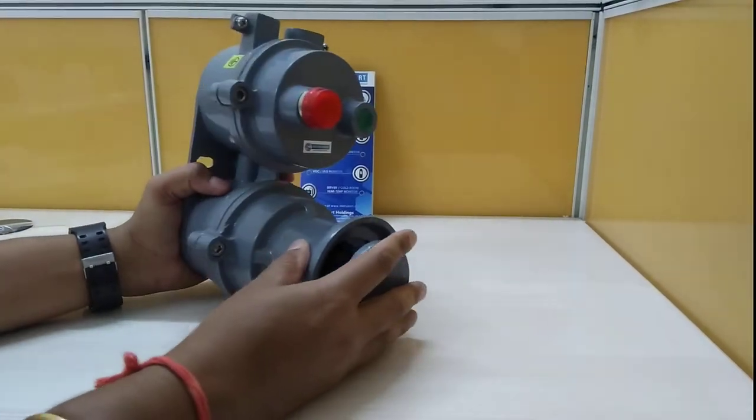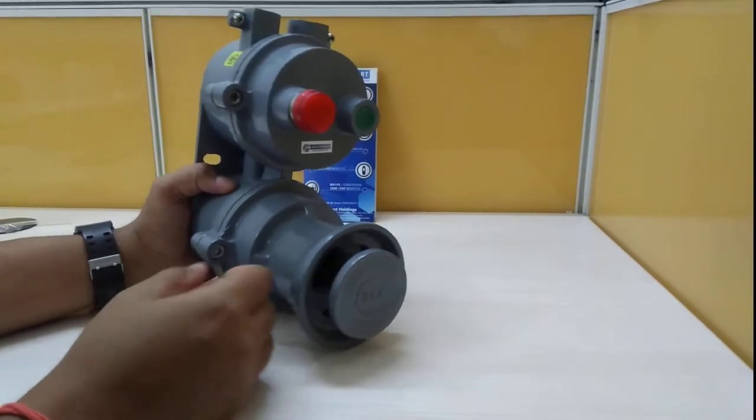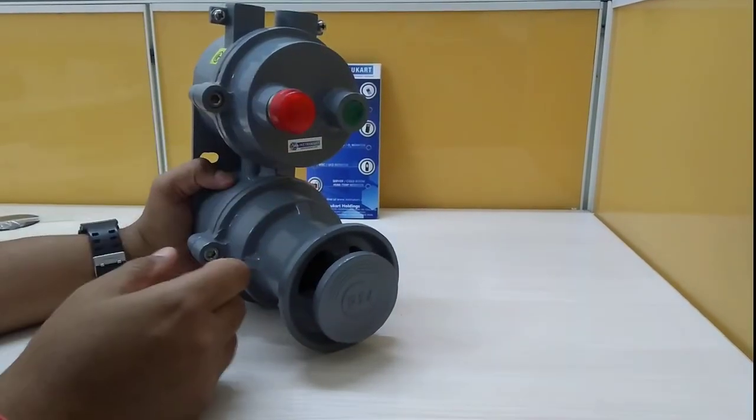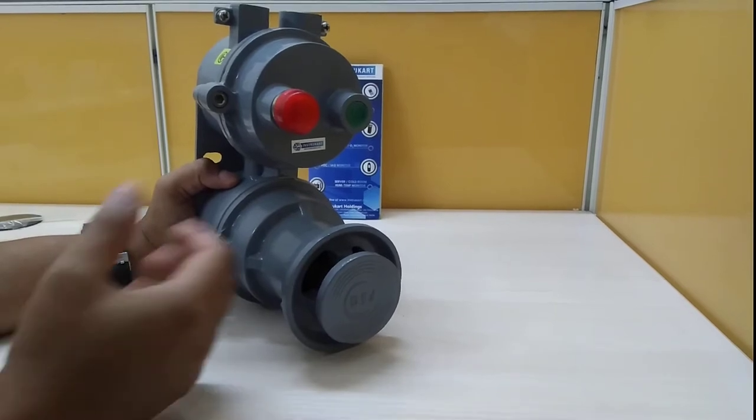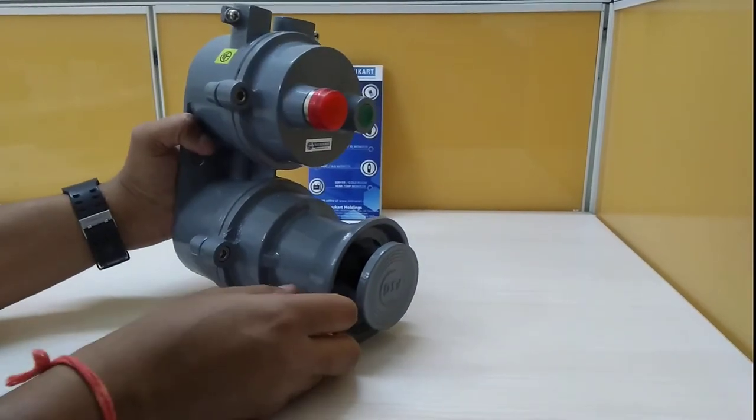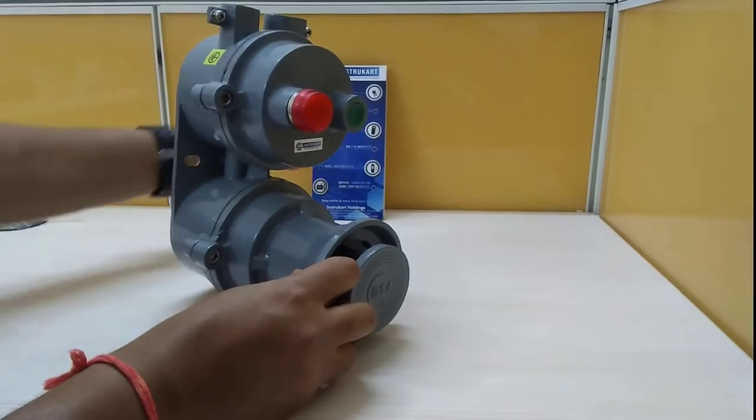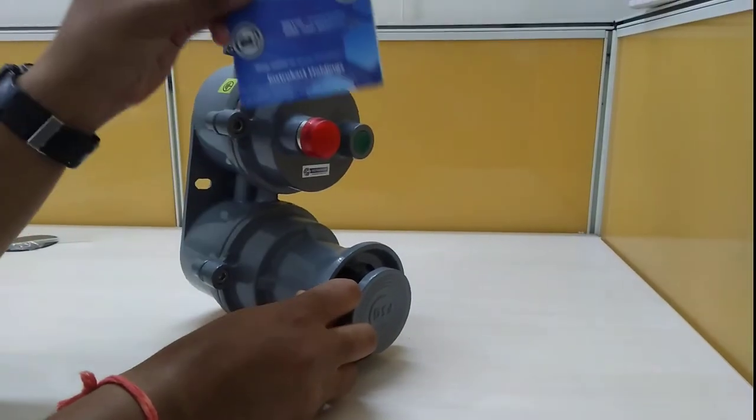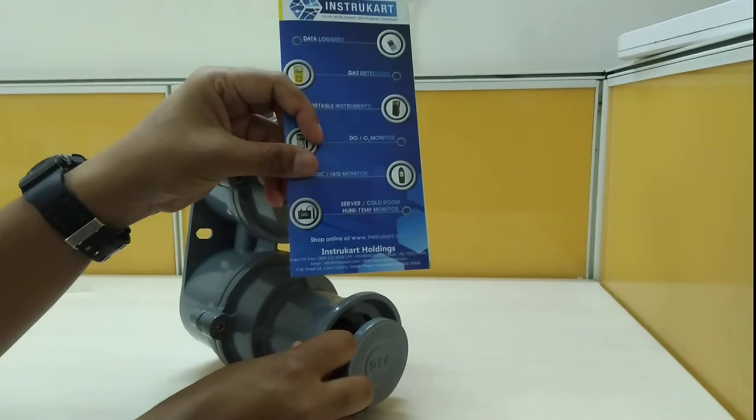We have different varieties of hooters also available. There are options without the acknowledgement key, without the flasher, or with the acknowledgement key without the flasher. A lot of models are available in the same category. You can choose from these by browsing www.instrucard.com.